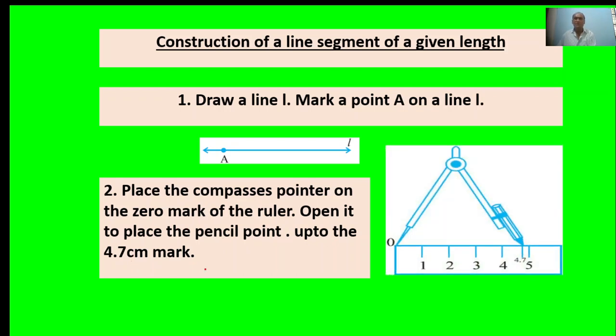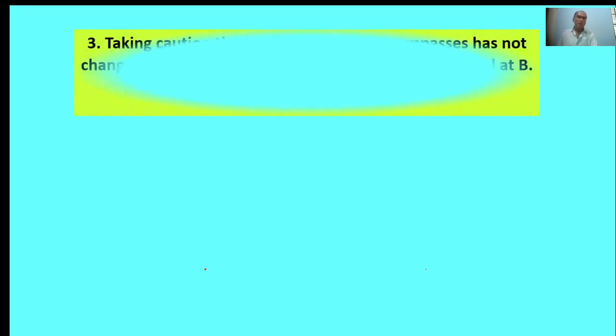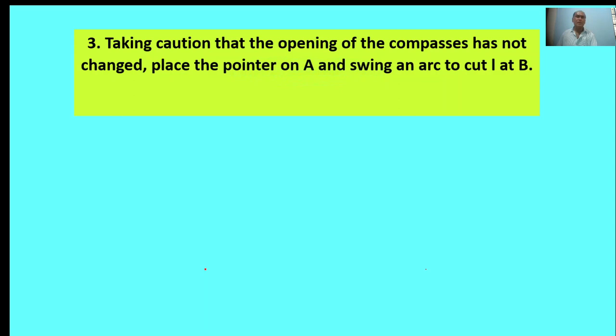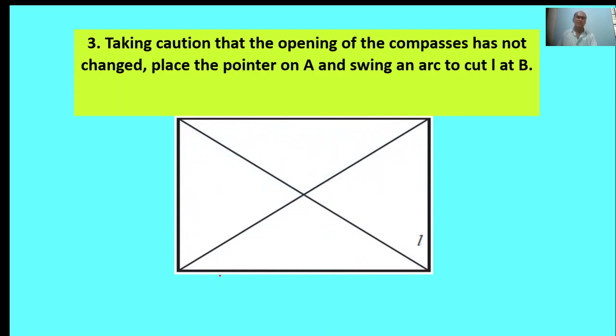Here, the figure shows 4.7 centimeters. Third point: Taking caution that the opening of the compass has not changed, place the pointer on A and swing an arc to cut L at B. This is the L line cut at B.